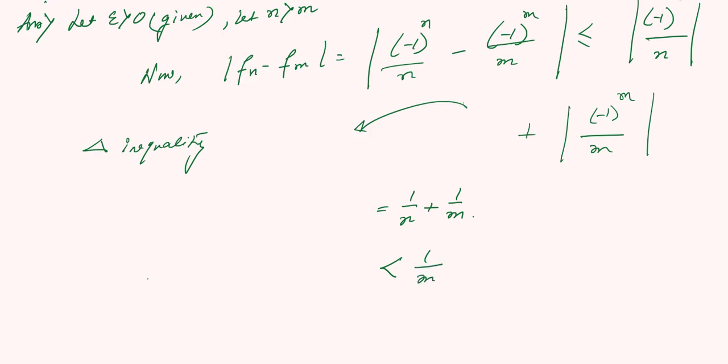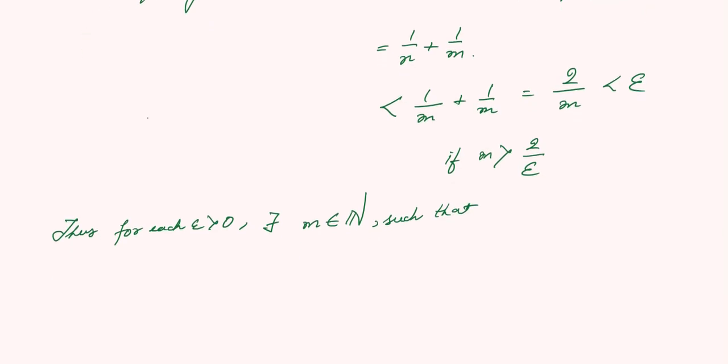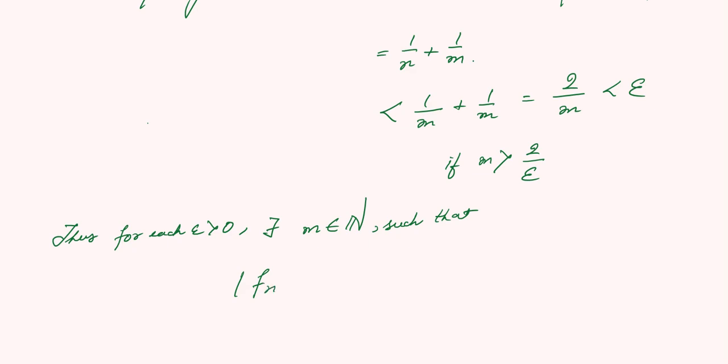Thus, for each epsilon greater than 0, there exists an m belonging to the set of natural numbers such that |f_n - f_m| is less than epsilon for n ≥ m.